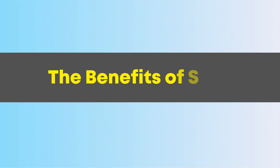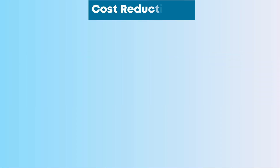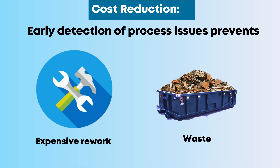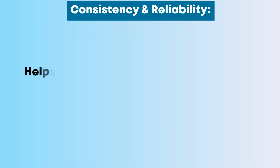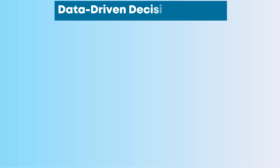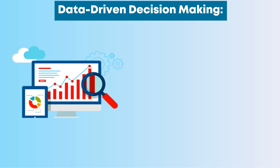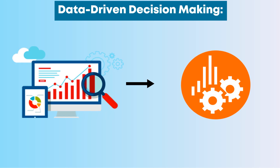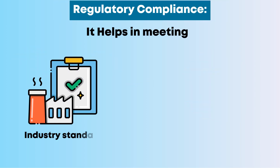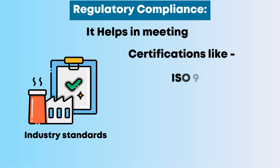The benefits of SPC include: Cost Reduction — early detection of process issues prevents expensive rework and waste; Consistency and Reliability — helps maintain process stability, ensuring uniform output quality; Data-Driven Decision Making — provides objective insights for process improvement; and Regulatory Compliance — helps in meeting industry standards and certifications like ISO 9001 and FDA requirements.